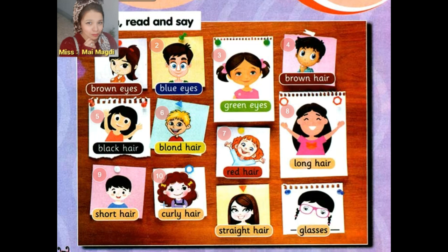Again, curly hair. Excellent! Bravo عليكم. Number eleven: Straight hair. Again, straight hair. What is the meaning of straight hair? Straight hair — يعني شعر ناعم مفرود. Okay, number twelve: Glasses. Again, glasses. What is the meaning of glasses? Glasses — يعني نضارة.